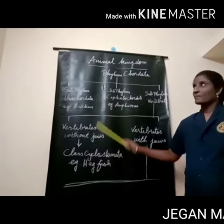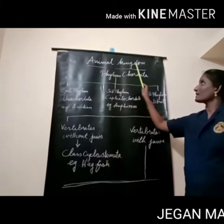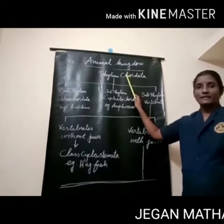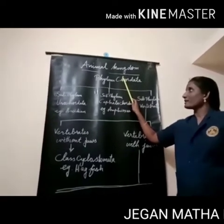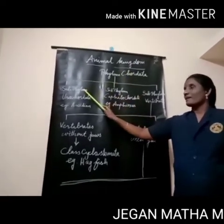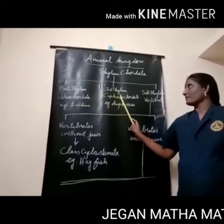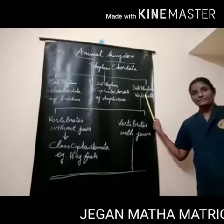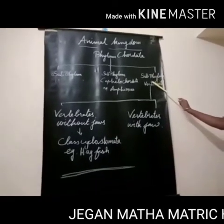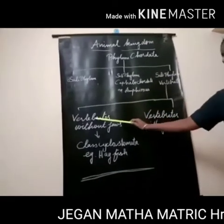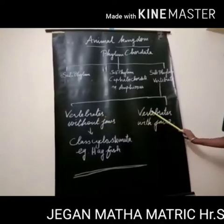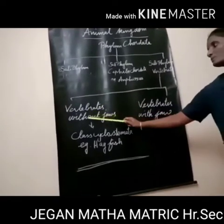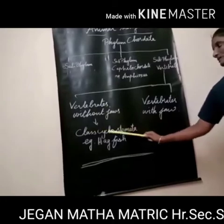Today we are going to see about the animal kingdom. In animal kingdom, we are going to see about phylum Chordata. Phylum Chordata is divided into subphyla: Urochordata, Cephalochordata, and Vertebrata. Phylum Vertebrata is classified as vertebrates without jaws and vertebrates with jaws. Vertebrates without jaws belong to class Cyclostomata.